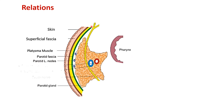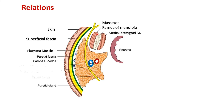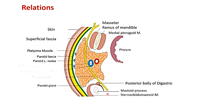The medial border comes in contact with the lateral wall of the pharynx. The anteromedial surface comes in contact with the posterior border of the ramus of the mandible and the muscles inserted onto it. On its outer surface is the insertion of masseter, and on the medial aspect near the angle of the mandible is the medial pterygoid. A helpful mnemonic: three M's — mandible, masseter, and medial pterygoid.